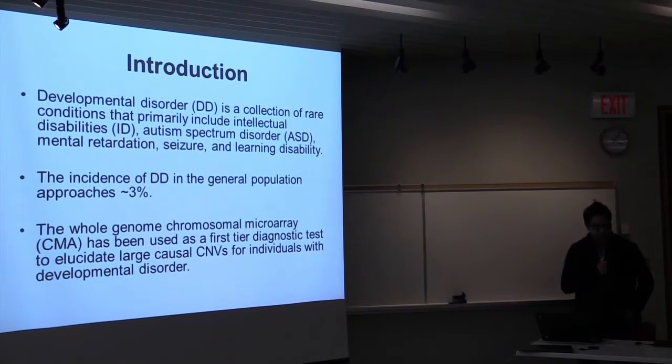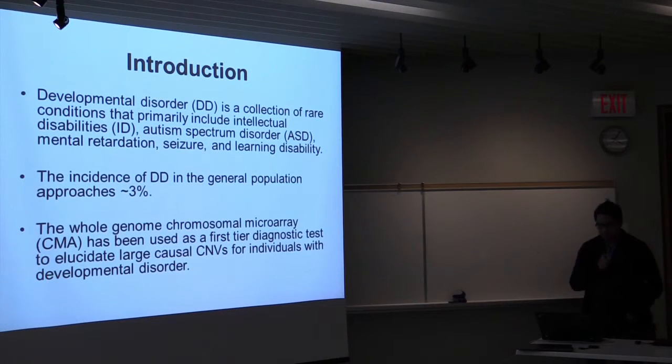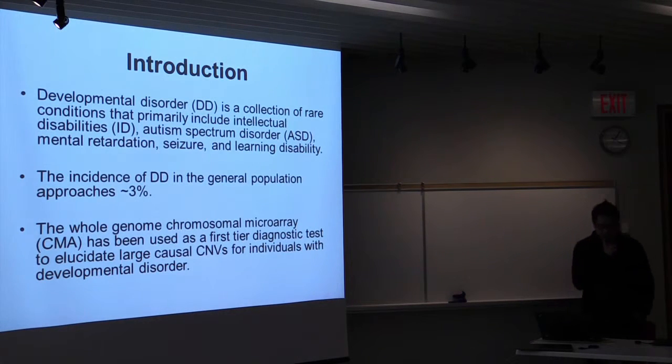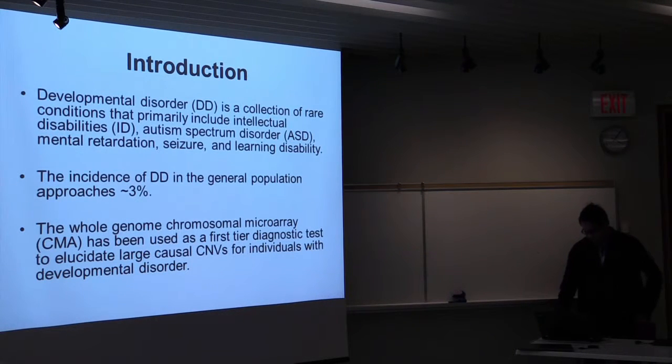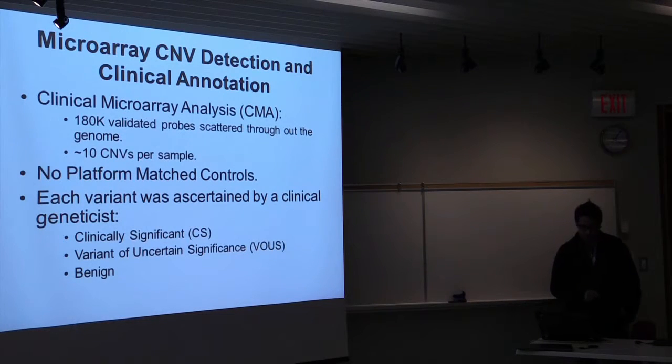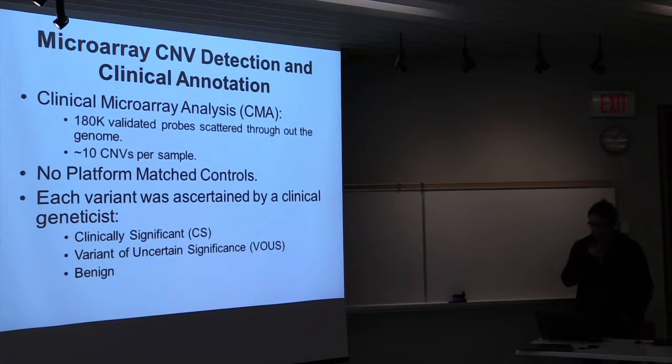The population prevalence of developmental delay is about 3%. The primary diagnostic for developmental delay patients is the chromosomal microarray, and it has a very good turnout because in developmental delay we tend to get large deletion notifications for about 10 to 15% of the cases. So even if you do exome sequencing, those large deletions are still there. The clinical microarray is very low resolution because we're targeting to detect large CNVs. It's 180K, but the probes are really good, validated probes, and we end up getting about 10 CNVs per sample.